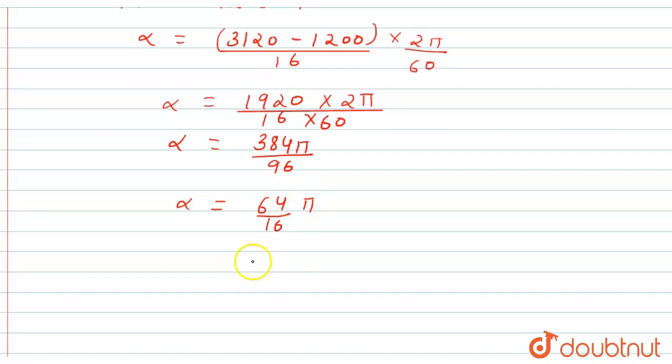So this is the value of angular acceleration. We can further simplify: 16 times 4 is 64, so this will be 4π radians per second square.